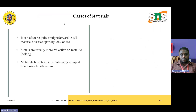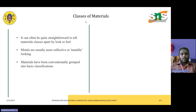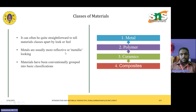Some materials are classified based on their straight look or feel, and some substrates are more reflective or metallic-looking in structure. Materials have been conventionally grouped into basic classifications: metals, polymers, ceramics, and composites.